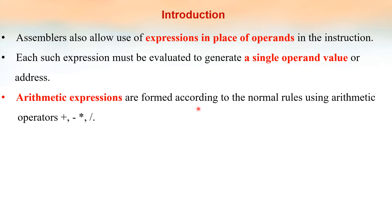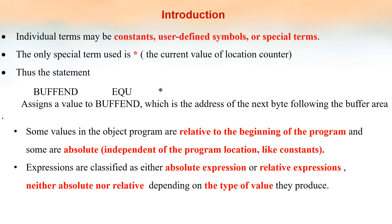Arithmetic expressions are formed according to the normal rules using arithmetic operators: plus, minus, star, and divided by. In an expression, the individual terms may be constants, user-defined symbols, or special terms. For example, in the expression a plus b, the individual terms a and b are variables, that is, user-defined symbols. In another expression a plus 1, the 1 is a constant. The individual terms can also be special terms.